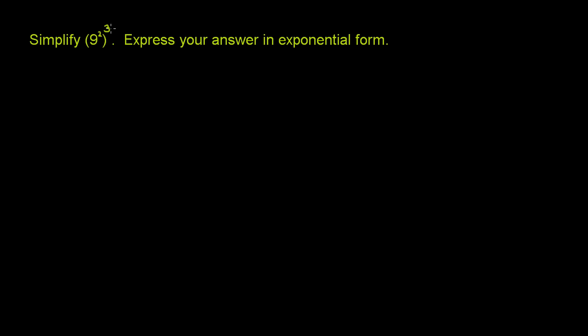We're asked to simplify 9 squared. Whatever 9 squared is — we think we know it's 81 — but we'll keep it at 9 squared. We need to simplify 9 squared to the third power. They want us to express our answer in exponential form, which means they want us to keep it as exponents and not multiply it out to get some really large number.